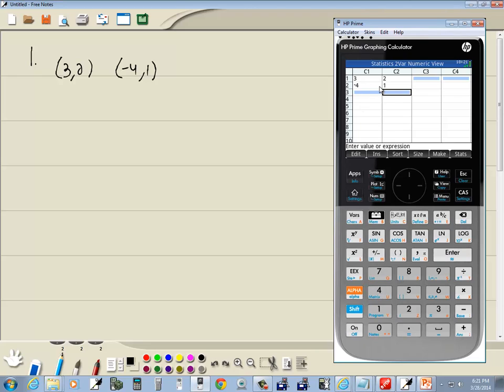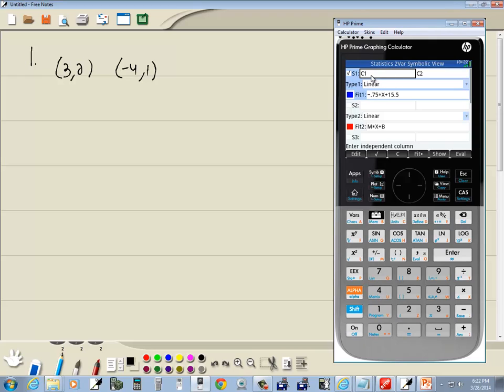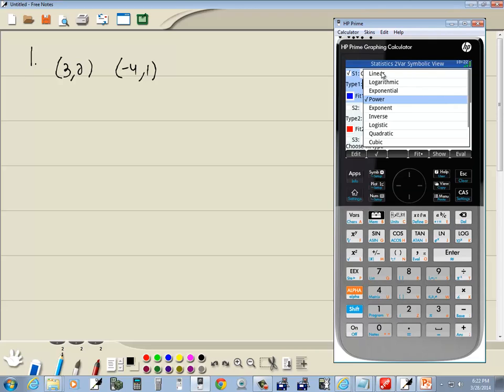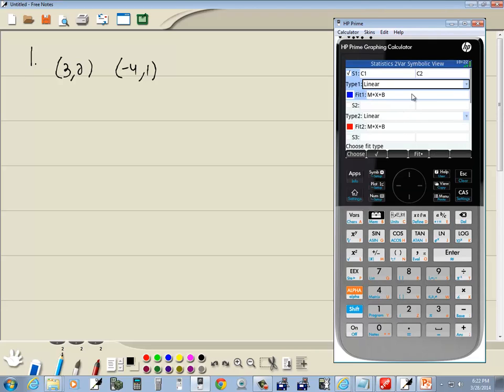You should see your points there, 3, 2, negative 4, 1. Now we're going to find the equation of the line that goes between these two points, so I'm going to press my symbol. You see how it says C1 and C2. We had our x values in C1 and our y values in C2, so that's good to leave as default. It should say linear. If it doesn't say linear, then you can do the dropdown here and choose linear. That's what's set up for regression models. Linear is what gives us slope intercept form.